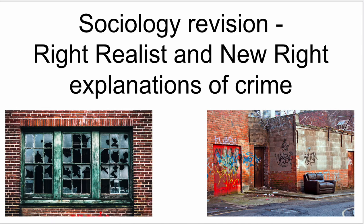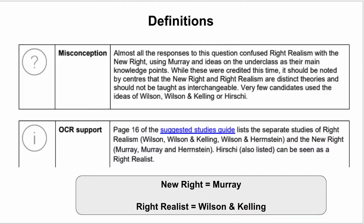In this video I'm going to talk through right realist and new right explanations of crime. This is just a revision video covering the key content, the key studies and the key concepts for these different perspectives. Before we get started, it's really important that we think about definitions here. This was something that was in an examiner's report from the OCR A level, and even if you're not studying OCR, I think it's an important point.